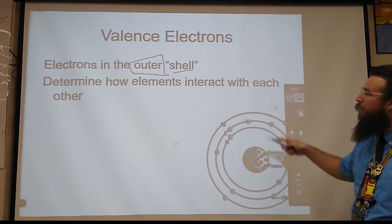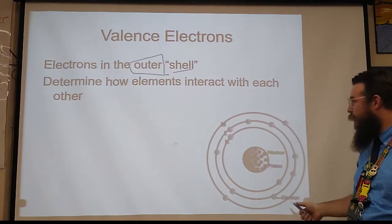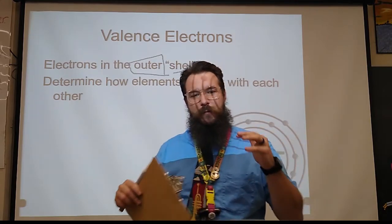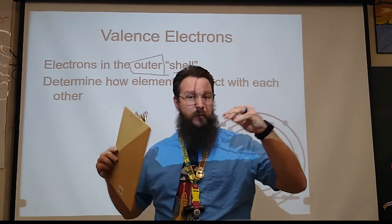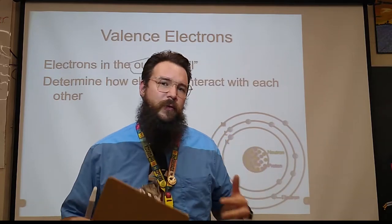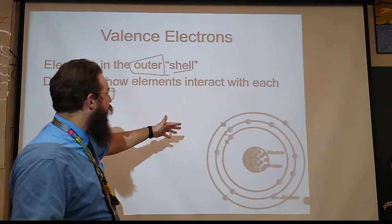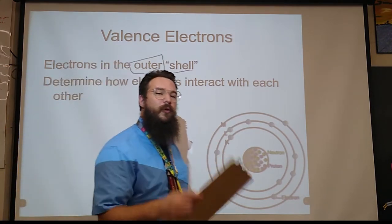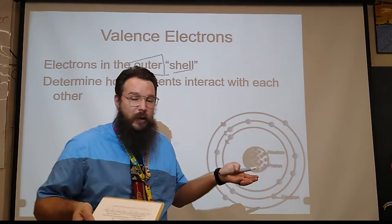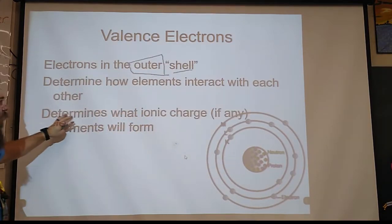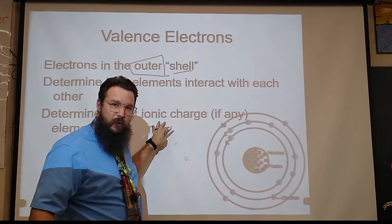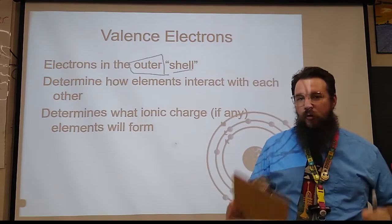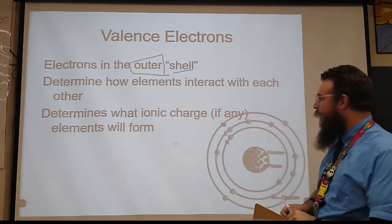These electrons are important because they determine how an element will interact with other elements. Depending on how many valence electrons and where those valence electrons are, how far out from the nucleus they are, is going to affect how elements will interact. We're also going to determine what kind of charge there's going to be, so we can determine how an element will ionize, what charges it will have based on its valence electrons as well.